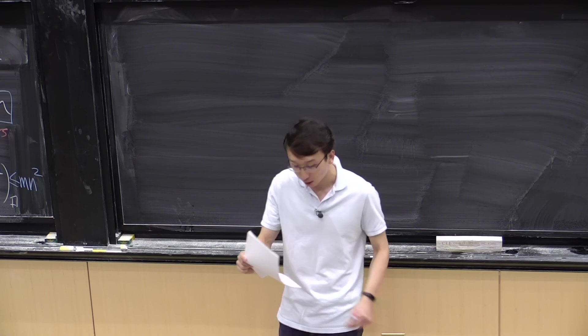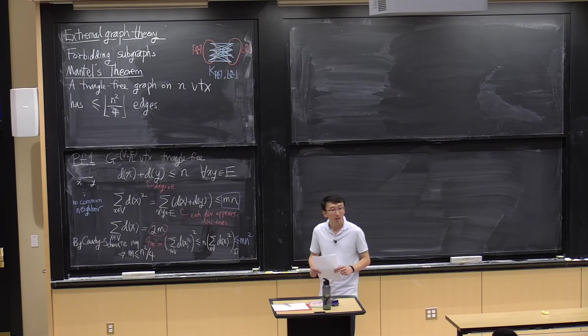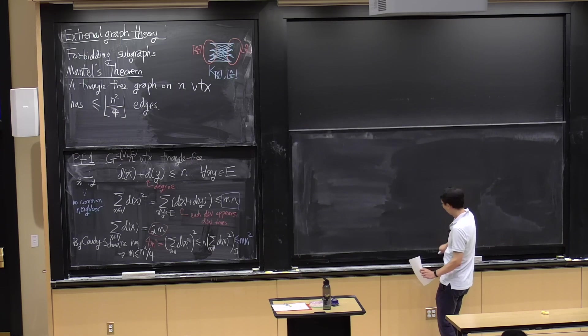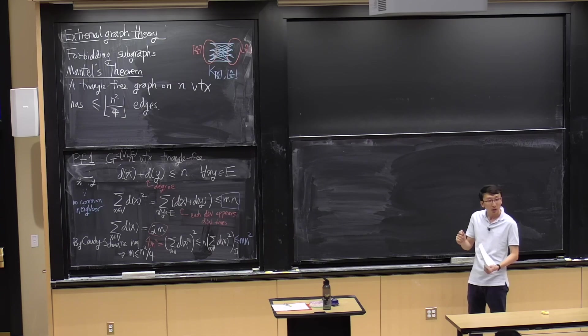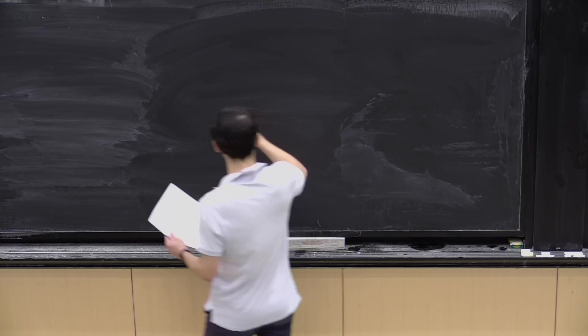What can you tell me about the equality case in this proof? I'll let you think about that. But let me show you some other proofs. In other words, are there graphs with the same number of edges as the graph shown that are also triangle-free? Is that a unique example?